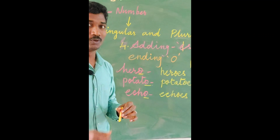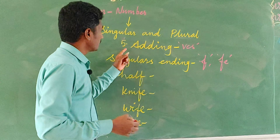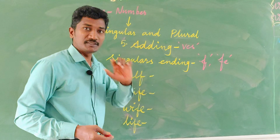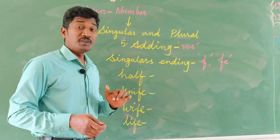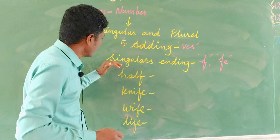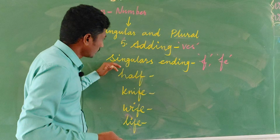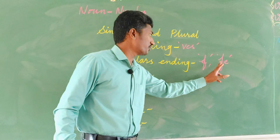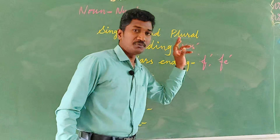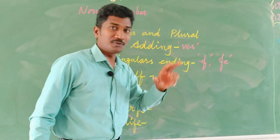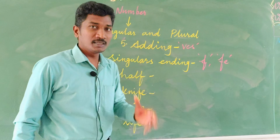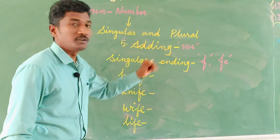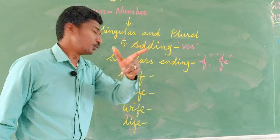Let us move on to rule number five: adding 'ves'. Where do we add 'ves'? Singular nouns which are ending in 'f' or 'fe'. If they are ending in 'f' or 'fe', we add 'ves' and make plural.